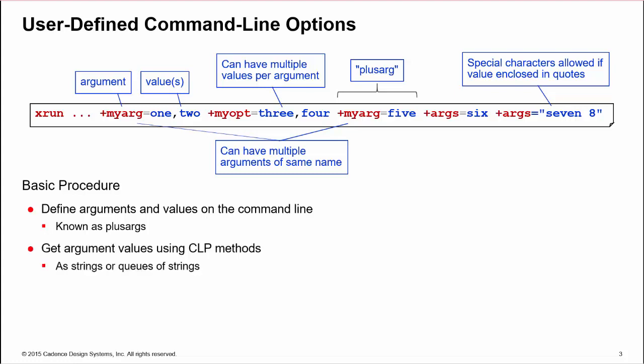We use the command line processor, CLP, to get these values as strings or queues as strings. We can process the strings or queues to extract individual argument value pairs and then act on the values.